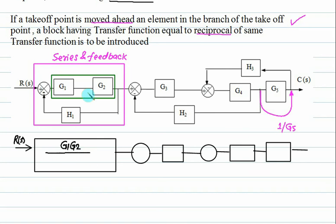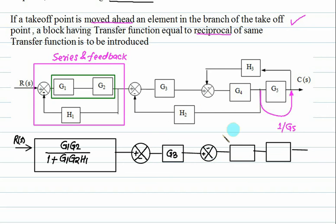Upon — now feedback. 1, sign is minus, sign is plus, this one is G1·G2·H1. This summing point as it is. Plus, minus, this one is G3. This summing point as it is. G5, minus. This block as it is: G4. This one as it is: G5. This one is C of S.